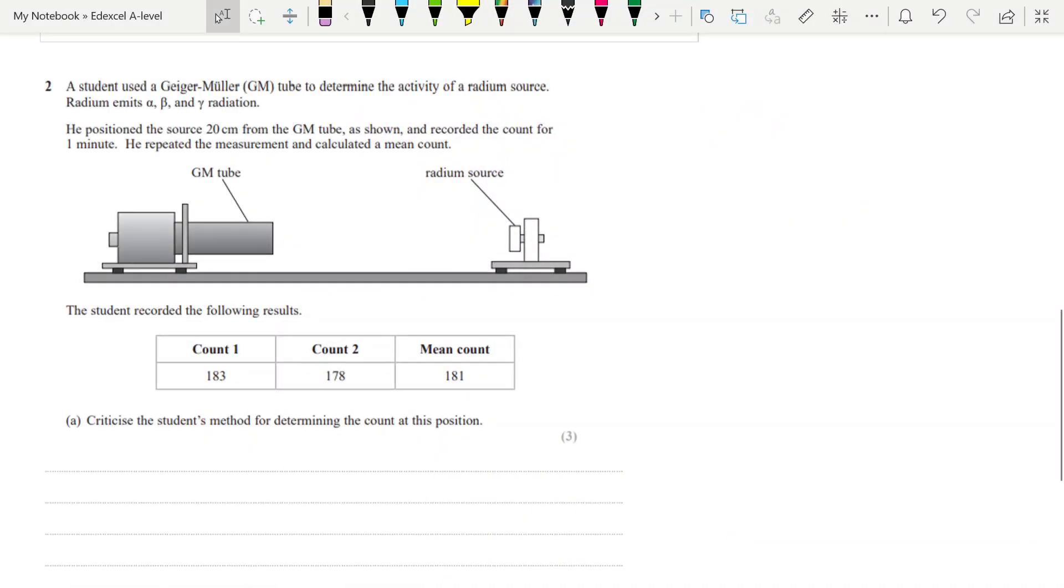The other type of critique you can be asked to do is someone's method. And so it's very important here to read the information you're given and look at the diagram and use your practical sense here. This example: he's positioned the source 20 centimeters from the GM tube and it's emitting alpha, beta and gamma and he thinks that 20 centimeters away he's going to detect and clearly there's a problem with that. Other ones I've seen is where the setup they're measuring the extension of a spring and the ruler is simply too far away. There's no way to determine if the ruler is vertical. Use your experience with practical work. Put yourself in that situation and say, what issues would I have with measuring this quantity if this was the exact setup?